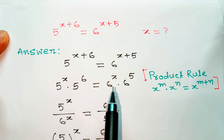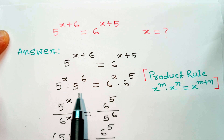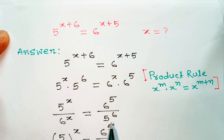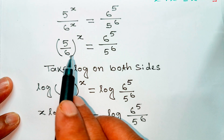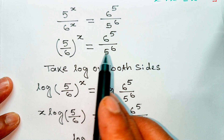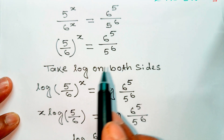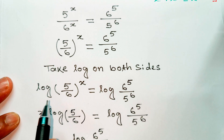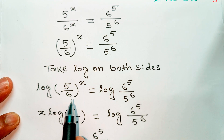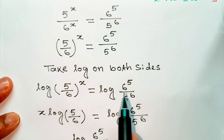Rearranging: 5 to the power x divided by 6 to the power x, equal 6 to the power 5 divided by 5 to the power 6. This gives us 5 divided by 6, to the power x, equal 6 to the power 5 divided by 5 to the power 6. Taking log on both sides: log of (5 divided by 6) to the power x, equal log of (6 to the power 5 divided by 5 to the power 6).